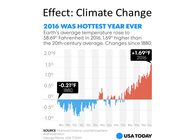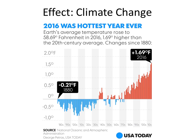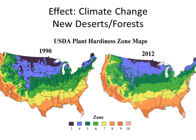Some areas might even get more rain and become tropical, depending on how climate patterns change. Here's a graph showing how climate change affects this. Looking at the 1990 USDA plant hardiness zones for the United States, especially the purple and blue at the top representing the coldest zones, you can see they're larger than in 2012. Fast forward to 2012, those coldest zones are getting smaller, while the warmer zones along the southern coast are expanding — showing a shift in climate from global warming.